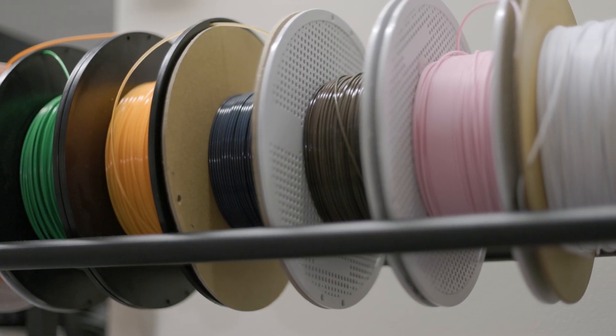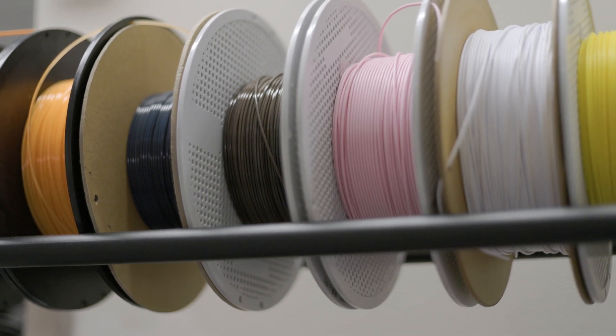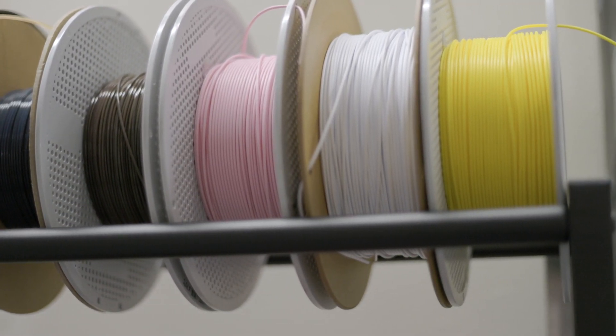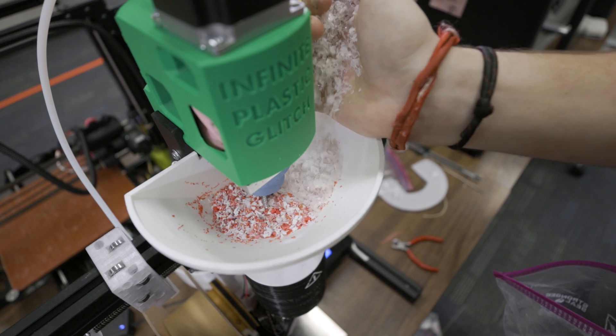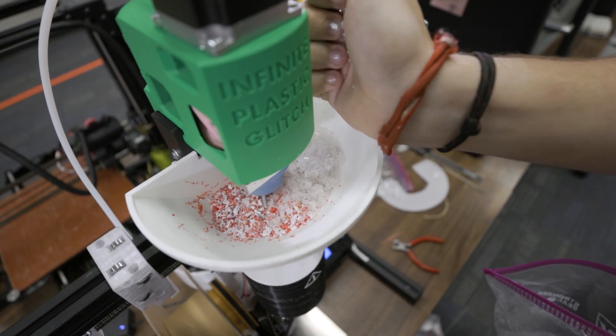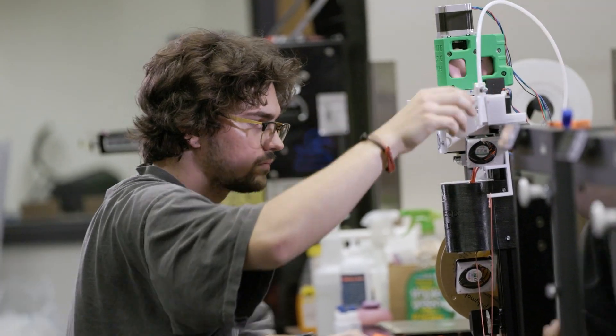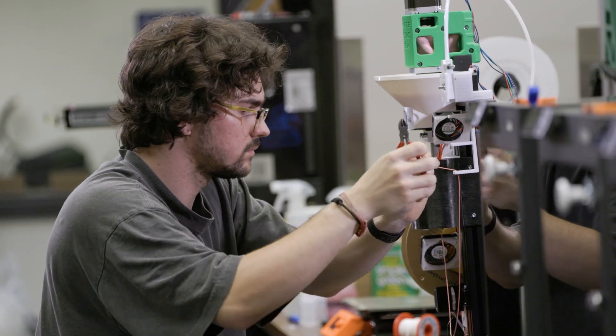The process here for recycling filament right now is we have a little storage place for all of our failed prints, support material for the 3D prints, and it all just kind of gets put in one place. And I have to make sure it's all the same material, separate it out.